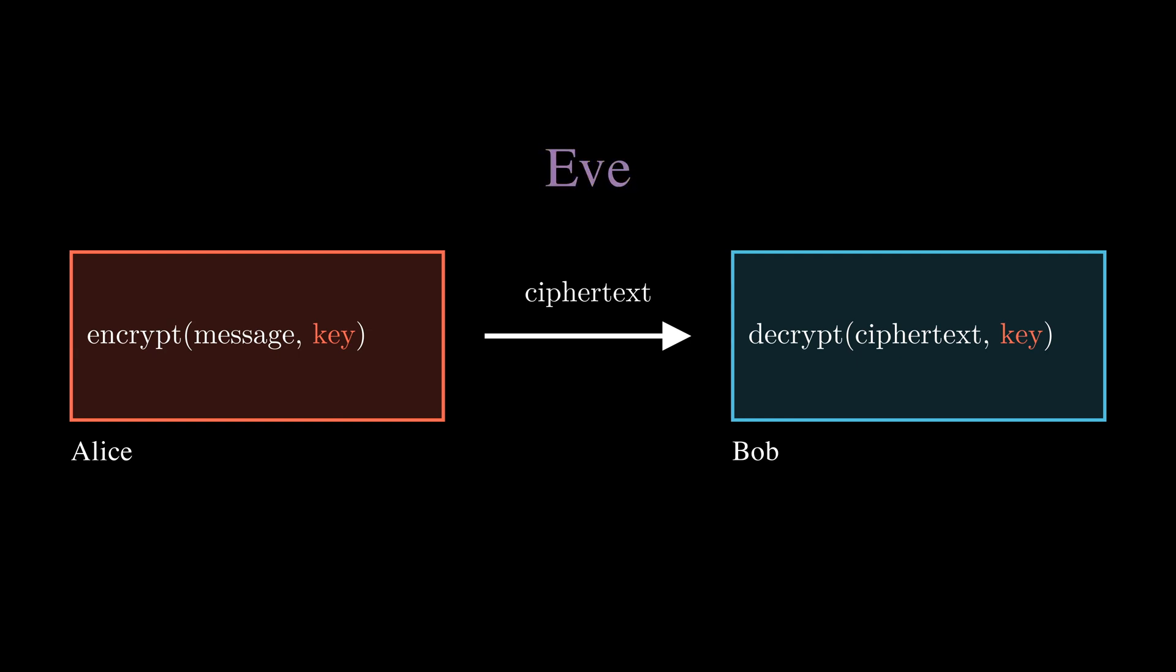The goal for Eve is trying to figure out the message from the ciphertext. Since they know the publicly available decrypt message, they just need the key. And thus, Alice and Bob's goal is to make it as hard as possible for Eve to find said key.